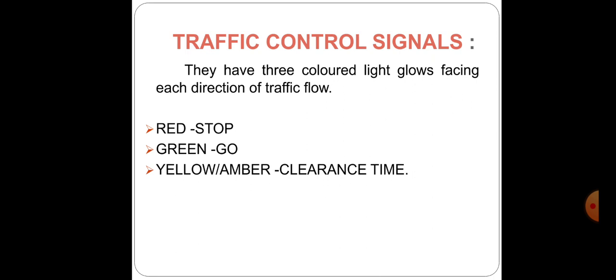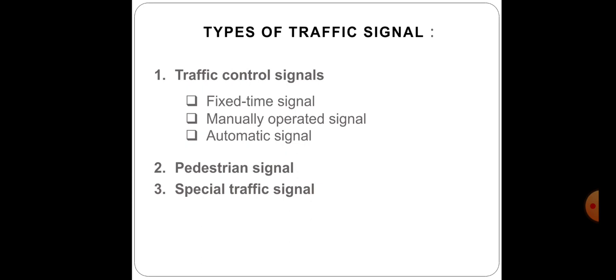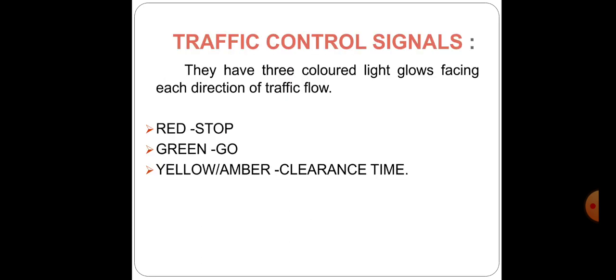The amber or yellow light is used to clear the road when the signal is changing from green to red. If a vehicle is caught at the amber signal in the middle of a large crossing, it is advised to continue with care and not accelerate in panic. A typical traffic signal head showing red, amber, and green lights is as illustrated in the figure.